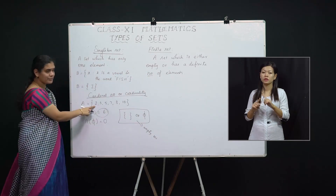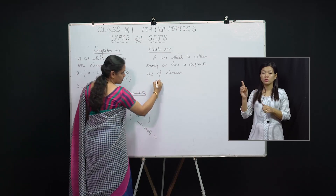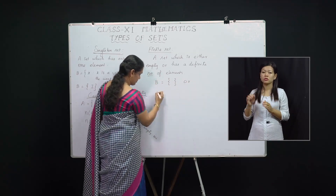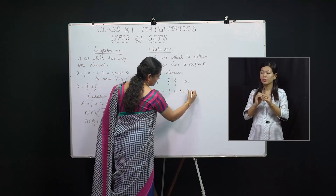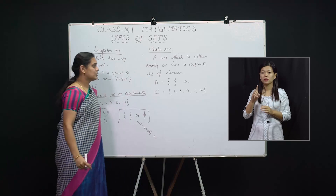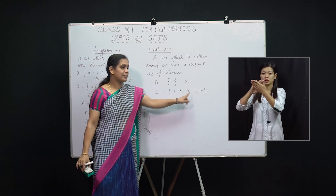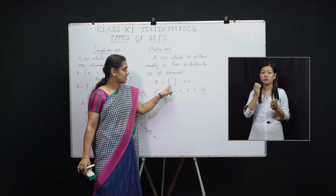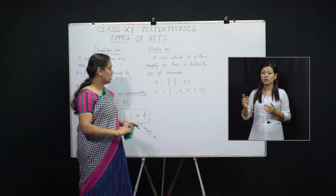For example, B = { } (empty set) or C = {1, 3, 5, 7, 10}. This set C is countable, so it is a finite set — it has a definite number of elements. And B, being empty, is also called a finite set.